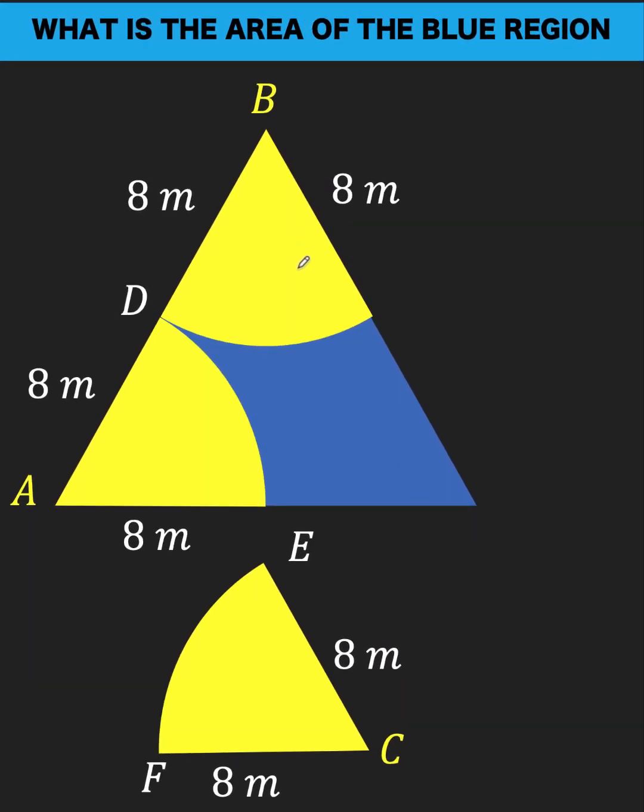Since the triangle is equilateral, that means that the measure of the interior angles are all 60 degrees. So this angle here must also be 60 degrees.